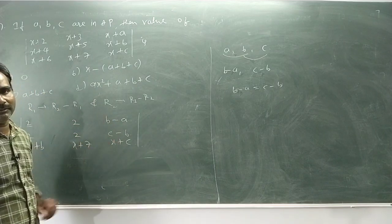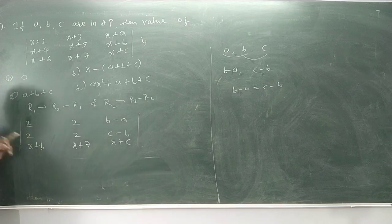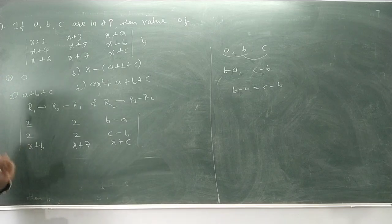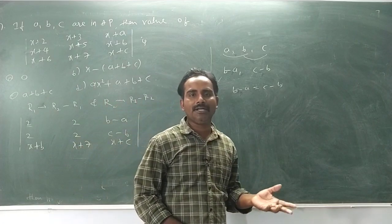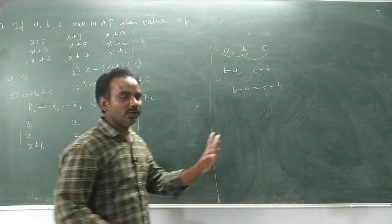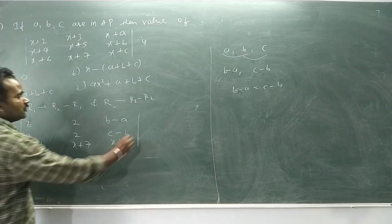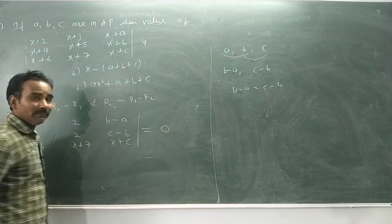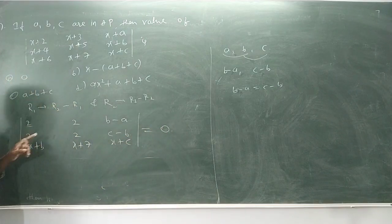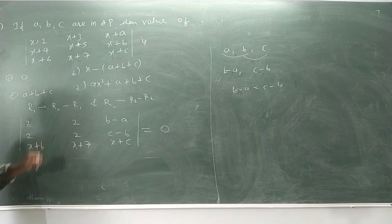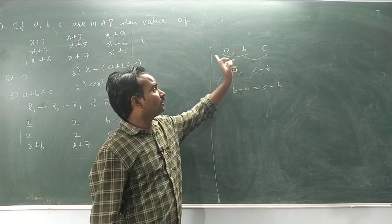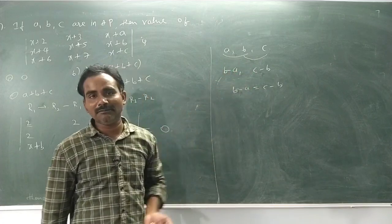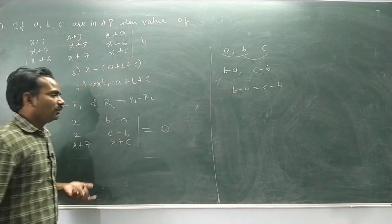With R1 and R2 both identical, by determinant property when two rows are the same, the determinant equals zero. B minus A equals C minus B because they're in AP with the same common difference, so the answer is zero.